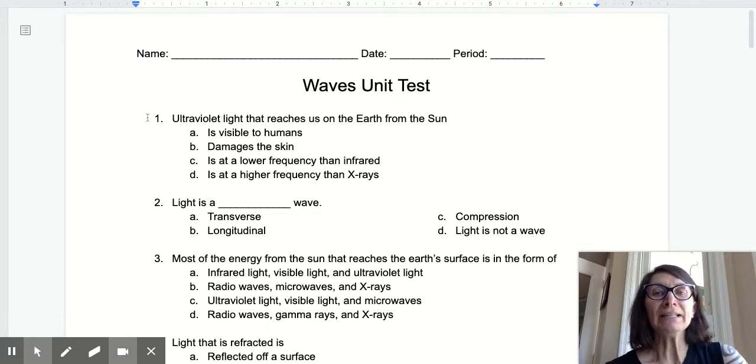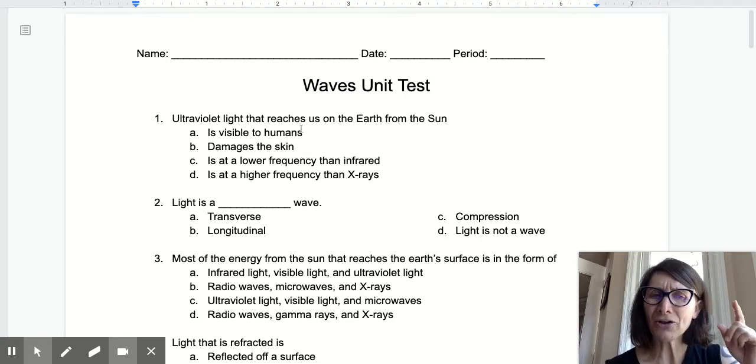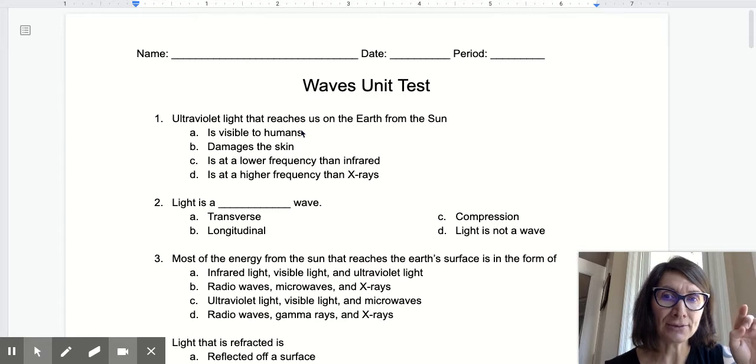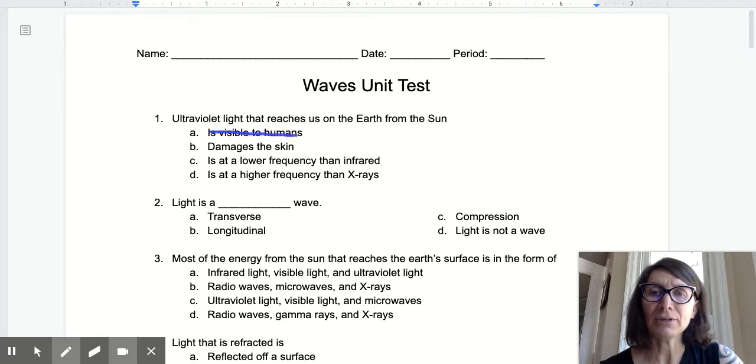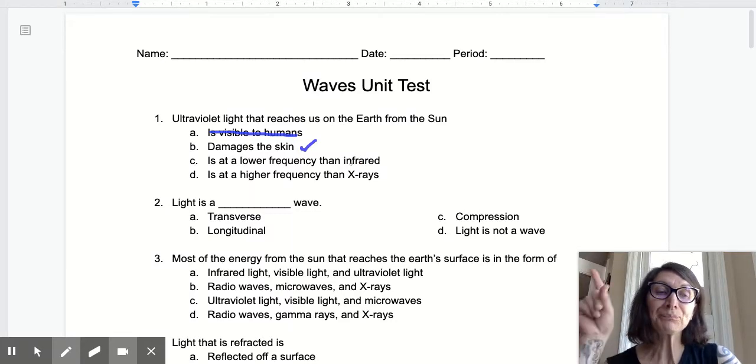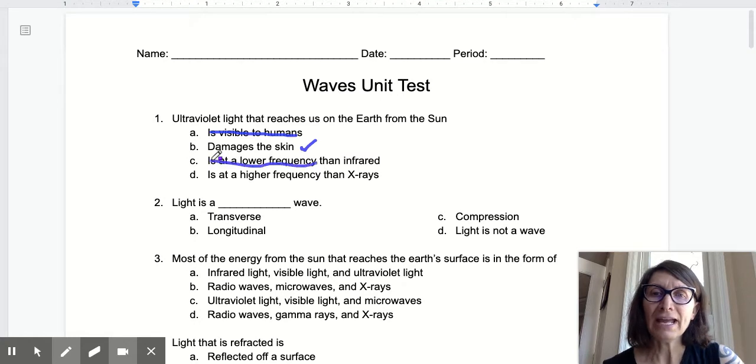So number one, ultraviolet light that reaches us on the earth from the Sun. Is UV light visible to humans? No. We know that. Cross that out. Damages the skin? Well yeah, I mean like sunscreen and stuff. Okay. Is that a lower frequency than infrared? No, infrared is below red, the lowest, so that's not true. And then is that a higher frequency than x-rays? No, x-rays are actually higher than ultraviolet. So ultraviolet is not higher. So my best choice here would be B.